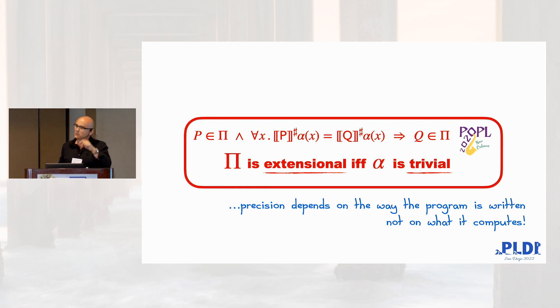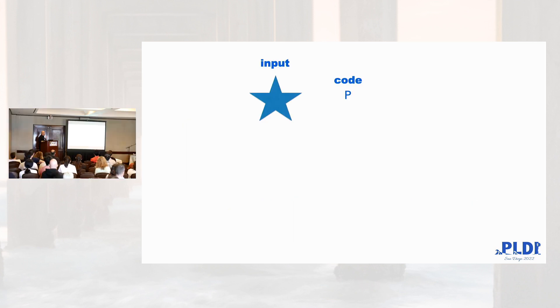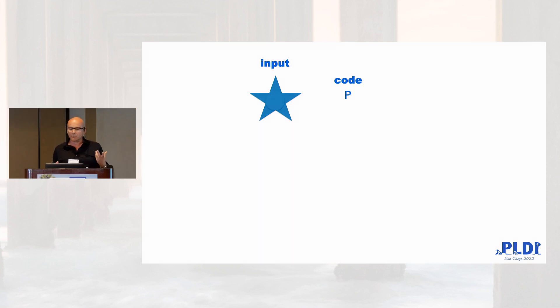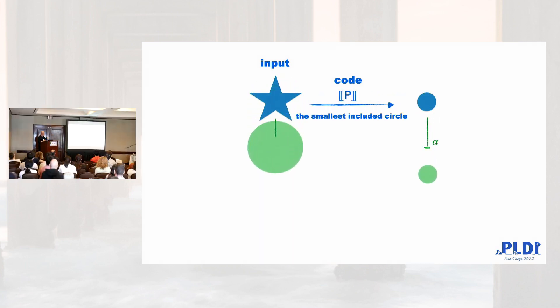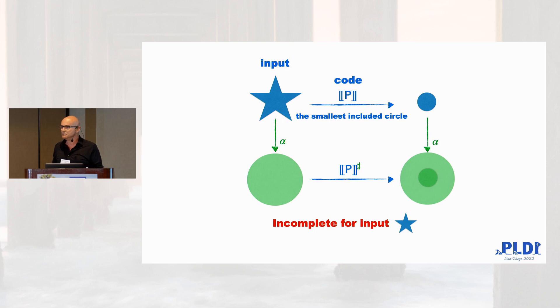There is another aspect which influences a lot the precision of the abstract interpreter. It's the input. Imagine that you have that input and you have a program that computes the smallest circle inside that input. Then you're abstracting the shapes and you're computing the abstract domain and you are immediately incomplete. That input, the big star, produces imprecision in the abstract interpreter.